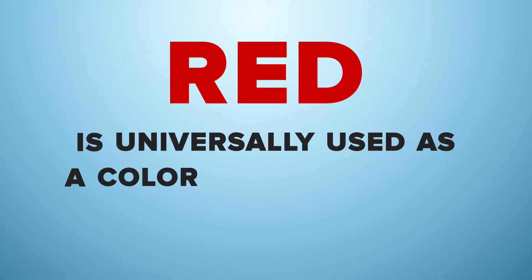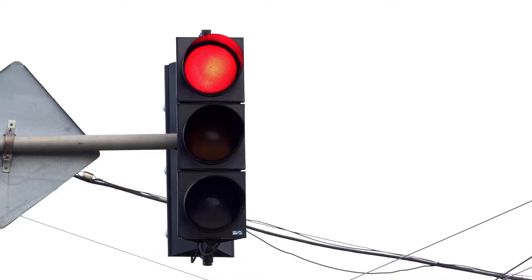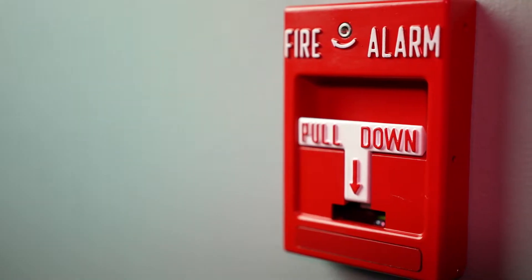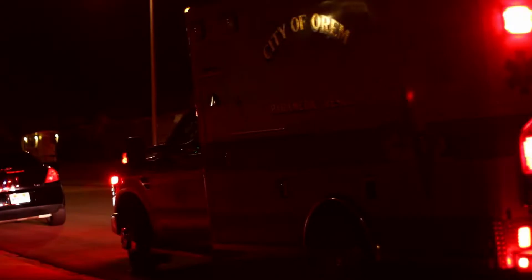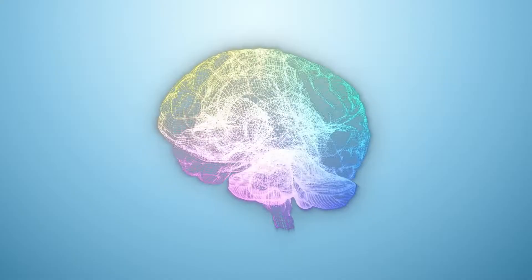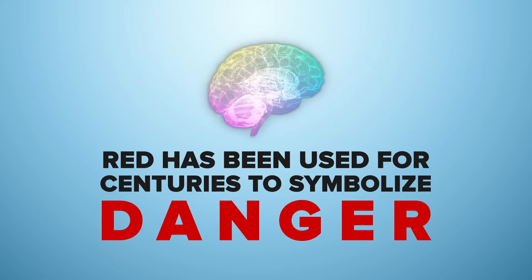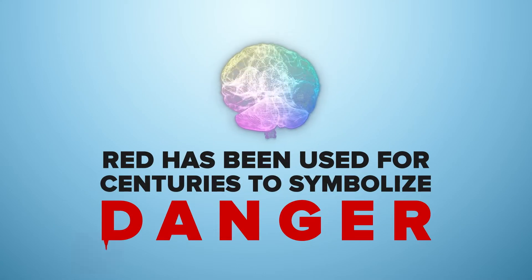Red is universally used as a color to represent a warning. Traffic signals, fire alarms, danger and prohibit signs, and siren lights for emergency vehicles have all adopted the color red. Psychologically, red has been used for centuries to symbolize danger because it's the color of blood.